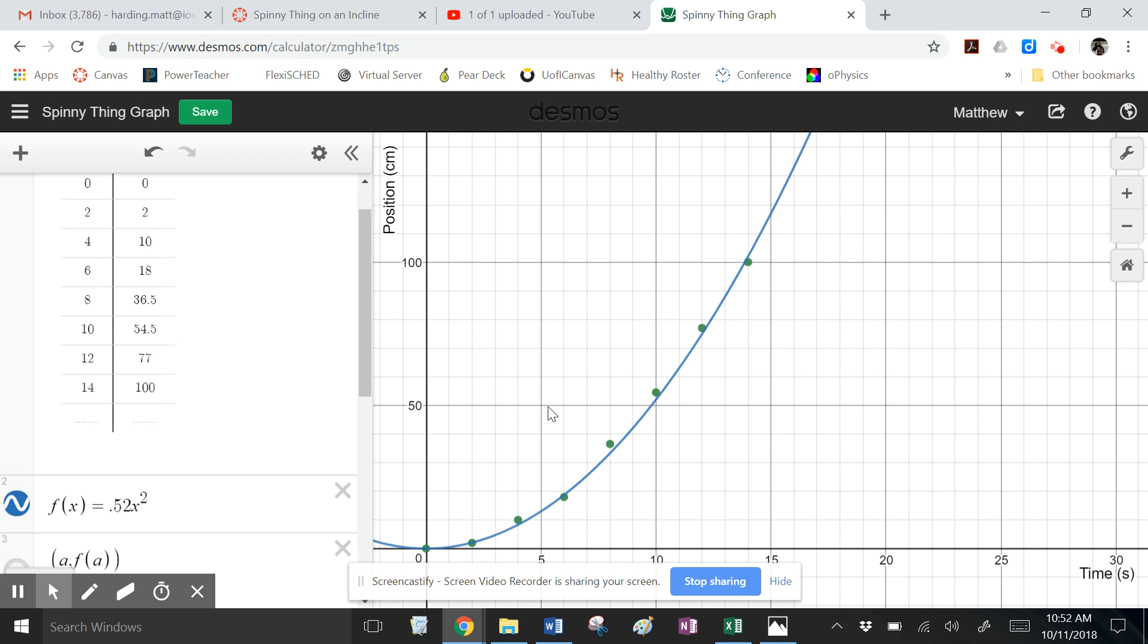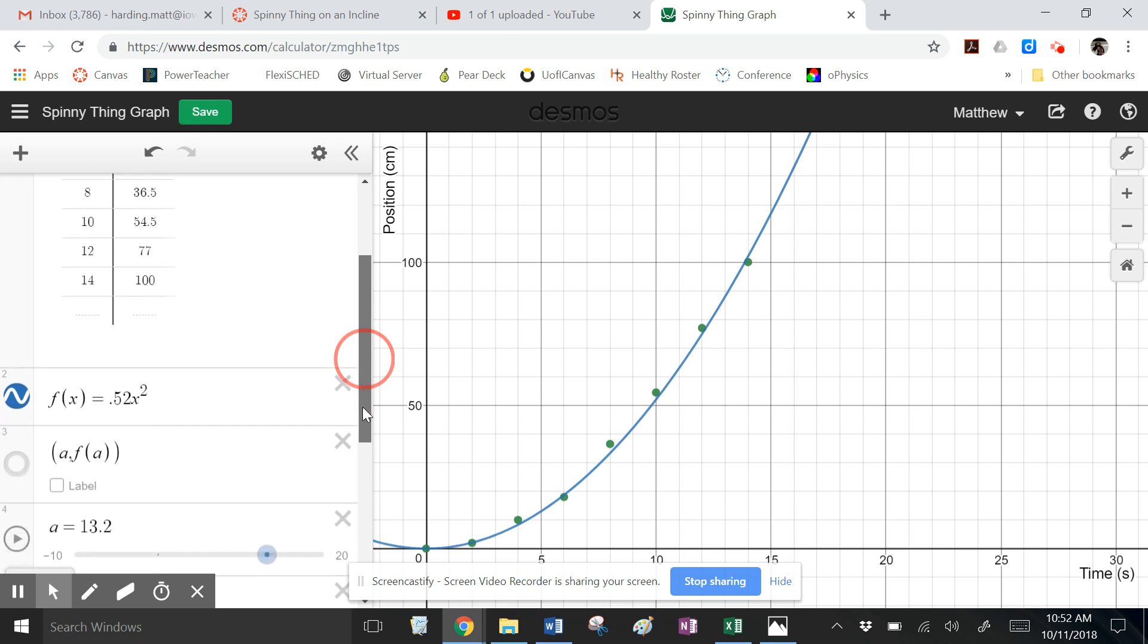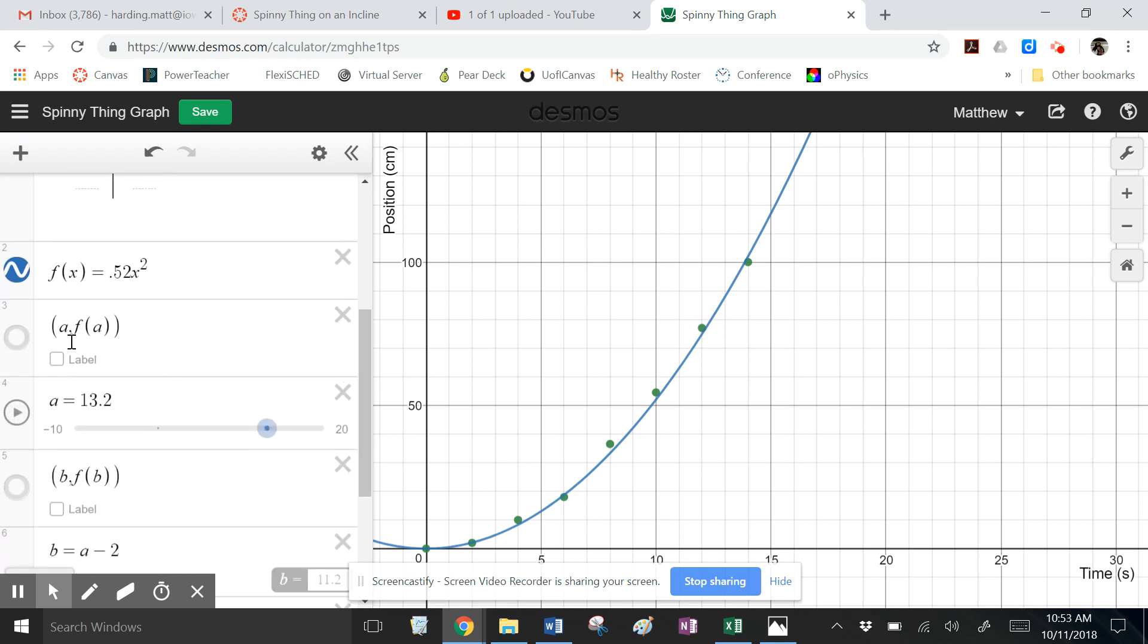But that presents a problem here if we want to create a graph of velocity versus time, because what do I use for the slope? So I've gone into Desmos and added a couple of lines here. This set A, F of A is going to create a point on the curve, I should say. And I've got a slider in here as well for A.